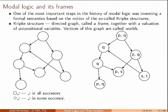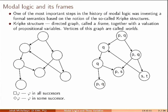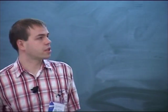A Kripke structure contains a directed graph called a frame and an evaluation of propositional variables. The formula square phi can be read as 'phi is satisfied in all successors', and diamond phi can be read as 'phi is satisfied in some successor'.